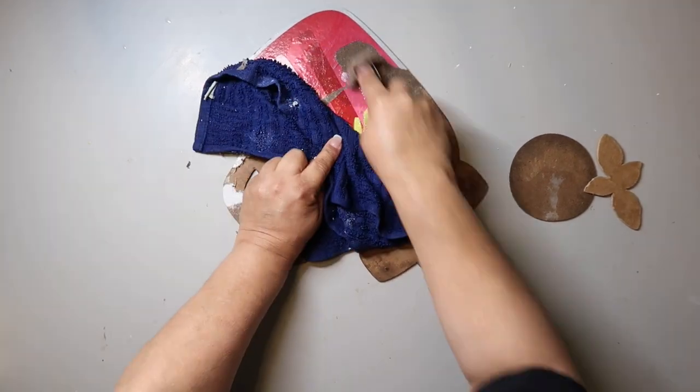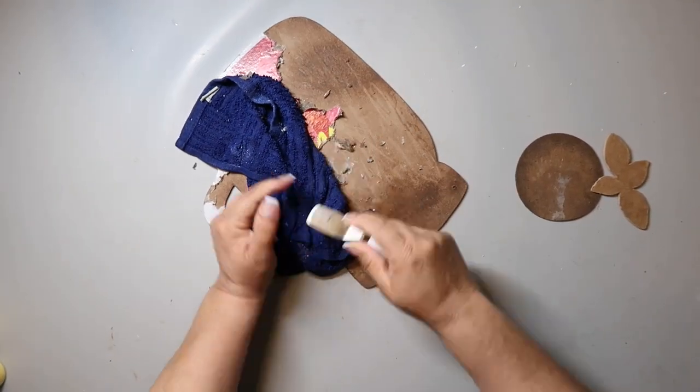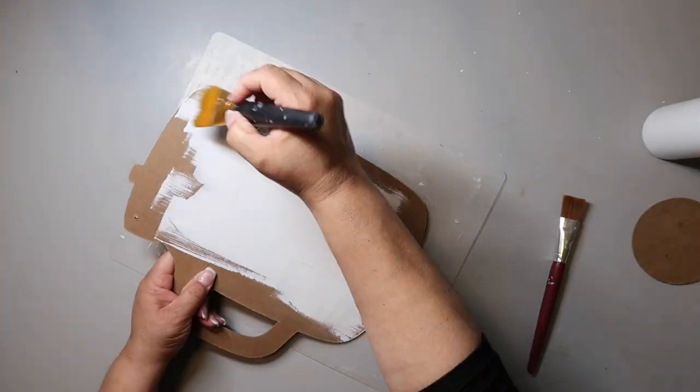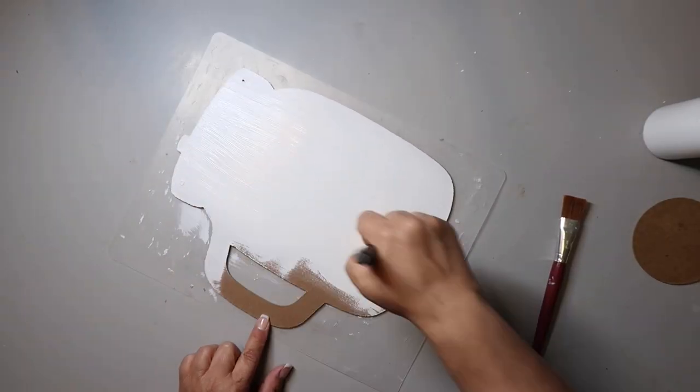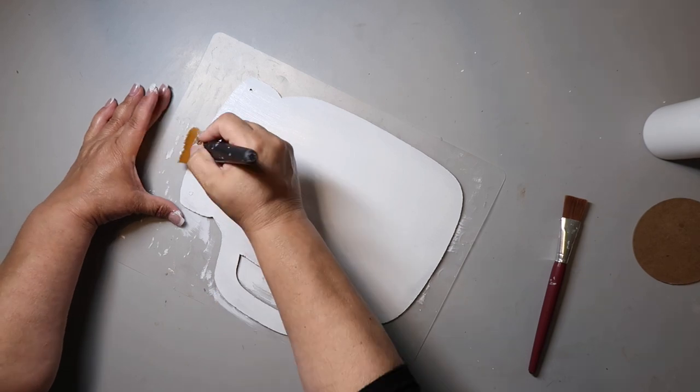Once all that's removed and the sign is dry, I'm just going to paint it white all over as kind of a base coat, and then I decided to remove the handle.